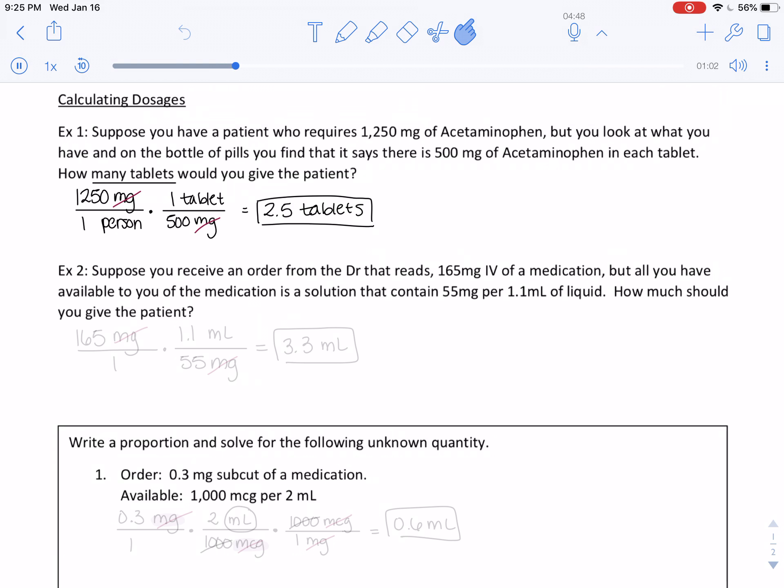Next, we have an order for 165 milligrams IV of medication, and all we have are 55 milligrams per 1.1 milliliters. We need 165 milligrams; we have 1.1 milliliters for every 55 milligrams. Milligrams will cancel here and here so that we get 3.3 milliliters. These ones aren't so bad.